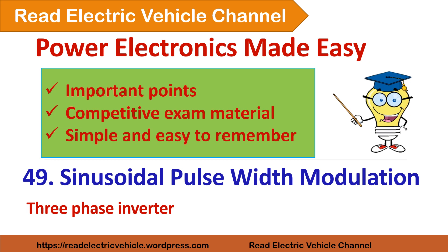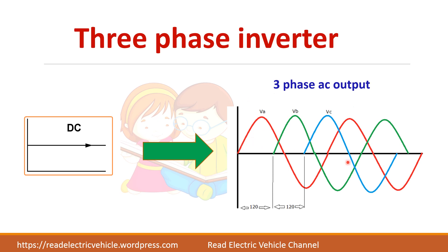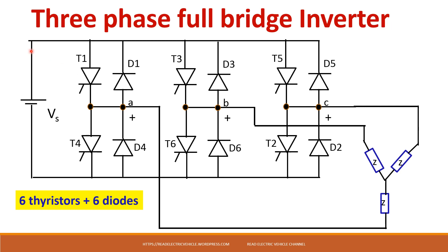Let us see about Sinusoidal Pulse Width Modulation in a 3-Phase Inverter. A 3-Phase Inverter converts a DC voltage into a 3-Phase AC voltage, where all 3 phases are phase shifted by 120 degrees. This is the circuit diagram of a 3-Phase Full Bridge Inverter, which consists of 3 legs and each leg consists of 2 thyristors connected in series.